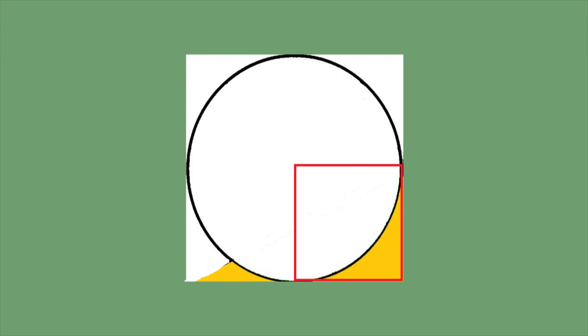Now consider one quarter of this square. Look at here. This one quarter of the square contains this part plus that part. The upper part belongs to one quarter of this circle.